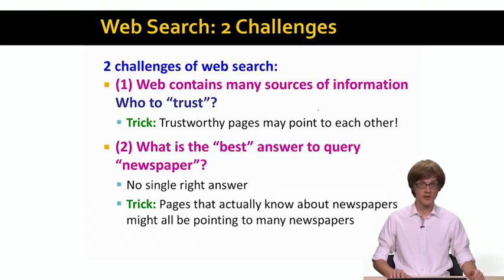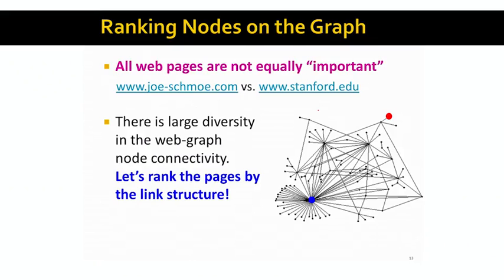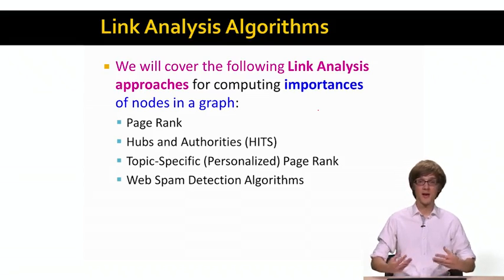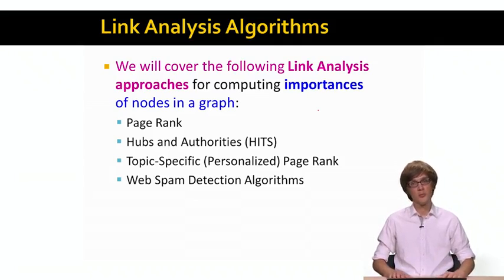The way we can address both of these challenges is to realize that the web as a graph has very rich structure. We can think of this problem abstractly as a way to rank nodes of a big graph — computing an importance score for every node in the web graph. Nodes that collect lots of links will have high importance, while nodes with few links or links from untrusted sources will have low importance. These approaches are broadly called link analysis, because we analyze the links of the web graph to compute importance scores.